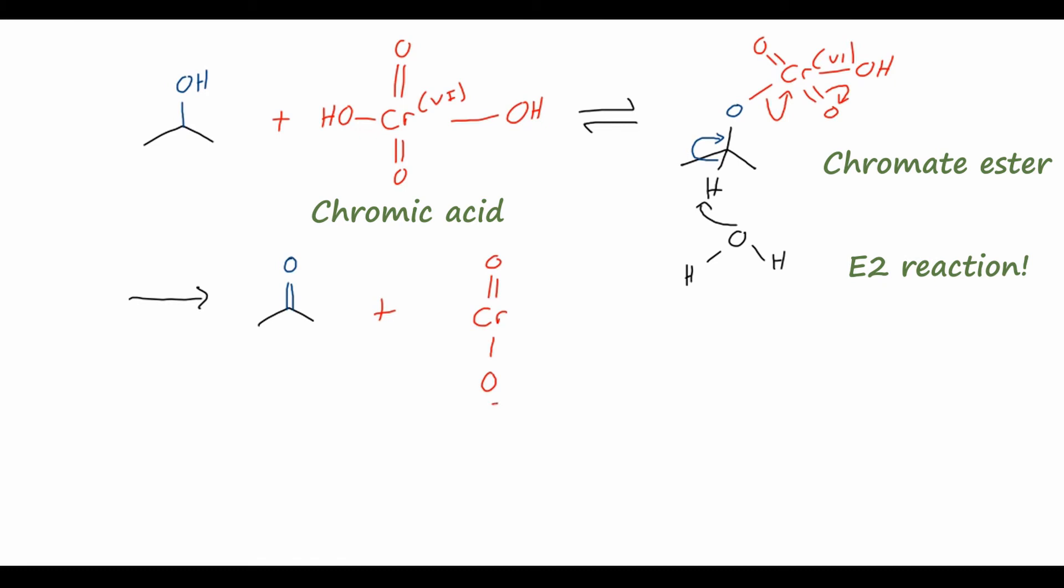And then we also end up with this chromium 4 compound. So the oxidation state of chromium has gone from plus 6 to plus 4 in our product. We know that the alcohol has been oxidized, so this acetone is our oxidized product, whereas the chromium has been reduced. So that is our organic redox reaction. And it turns out that this chromium 4 compound can actually go on to oxidize more molecules of alcohol. So what we end up with in the very end of this reaction is all the chromium being turned into chromium 3. This is our final oxidation state of chromium.